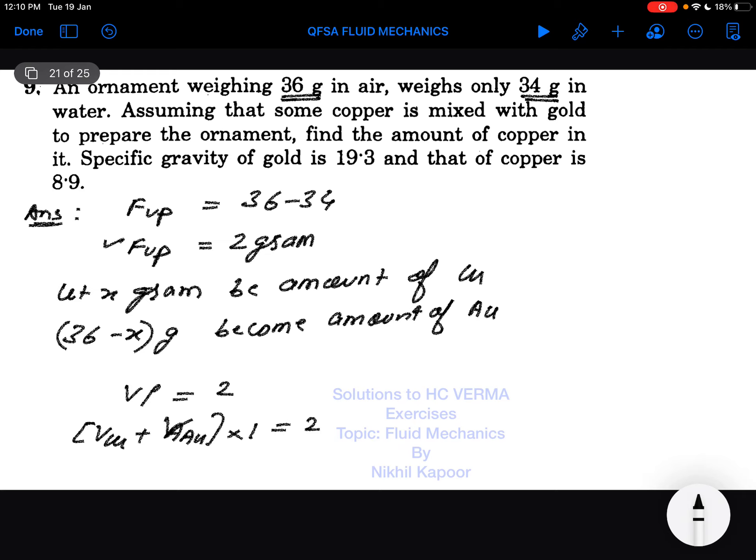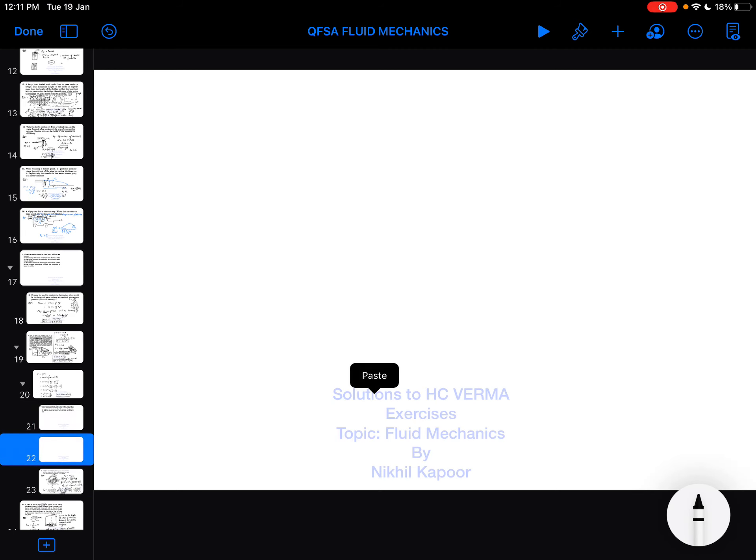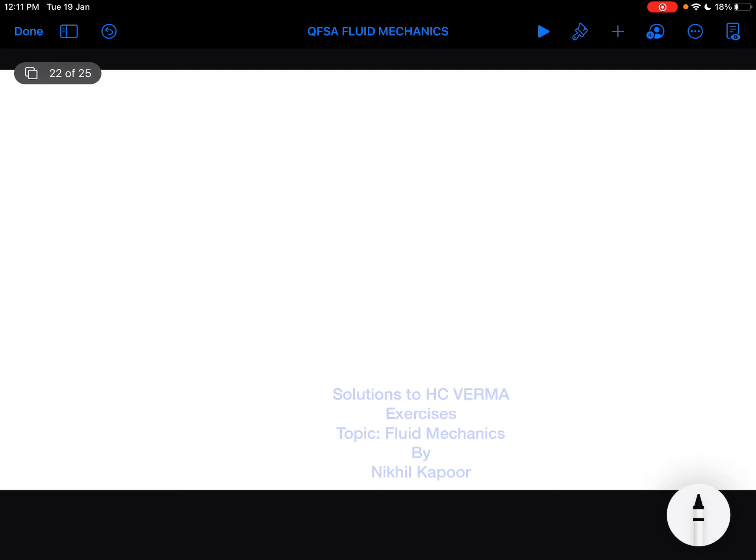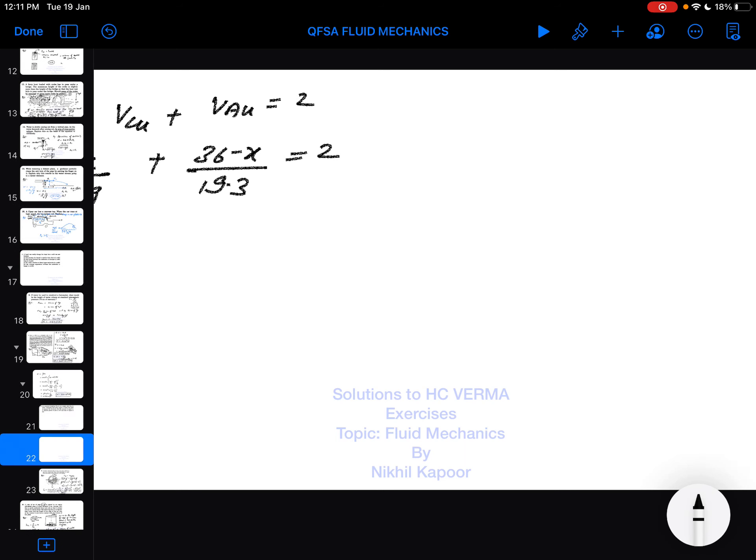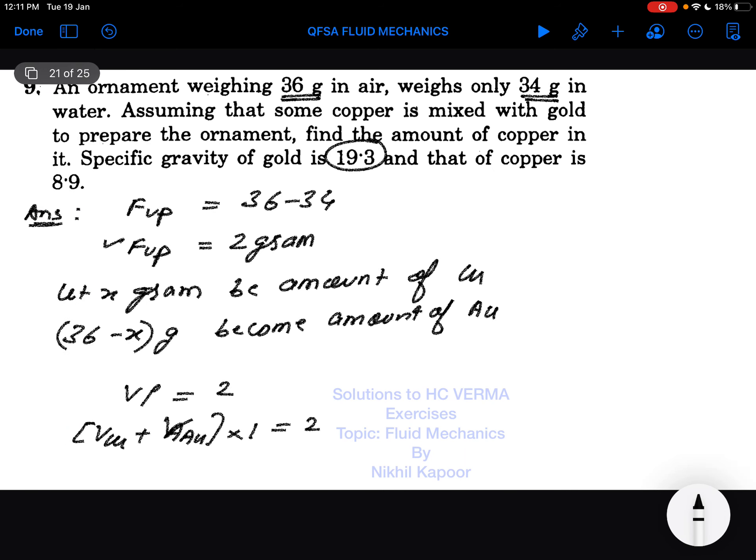The equation we have is volume of copper plus volume of gold equals 2. Since volume equals mass divided by density, we have x/8.9 for copper plus (36-x)/19.3 for gold equals 2. The density of copper is 8.9 and gold is 19.3.